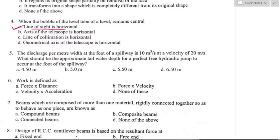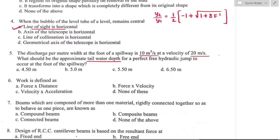Question number five: the discharge per meter width at the foot of a spillway is 10 m³/s at a velocity of 20 m/s. What would be the approximate tailwater depth for a perfect hydraulic jump? The initial water depth equals discharge divided by velocity: 10/20 = 0.5 m. Using the conjugate depth formula, y₂ = (y₁/2)(−1 + √(1 + 8F²)), where F is the Froude number.